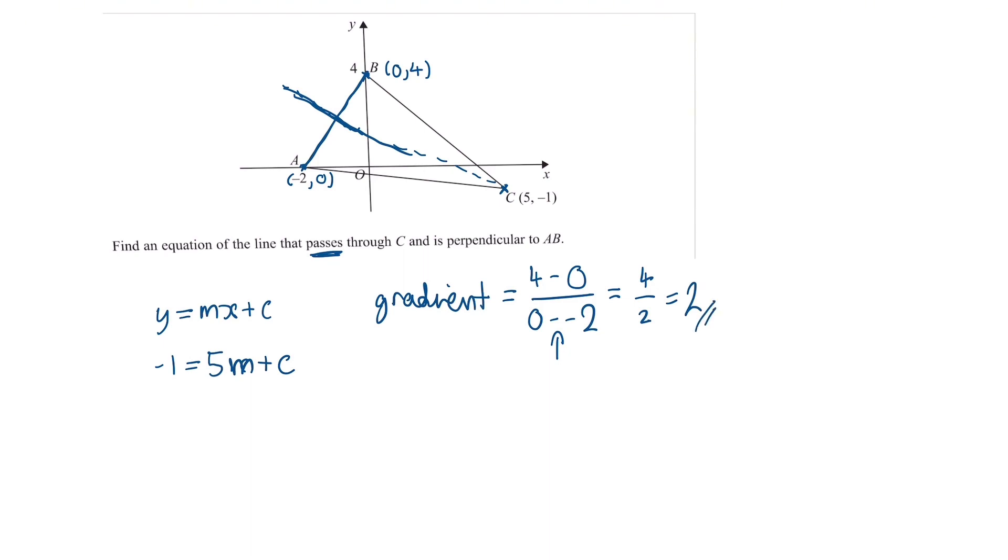Now as we want the gradient of the line perpendicular to it, to get the gradient of that line we just take the negative reciprocal of it. So we put a negative in front and do 1 over that. So the gradient of this straight line is just minus a half. So now we can replace m with minus a half. So we have y equals minus a half x plus c.